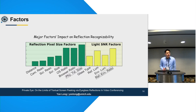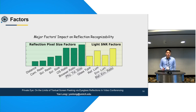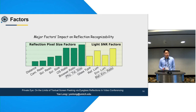The second category includes factors that affect the signal-to-noise ratio of the reflected light — for example, the lighting in the room. We did qualitative analysis in our paper, and I would refer you to the paper for a more comprehensive analysis of how these factors affect reflection quality.